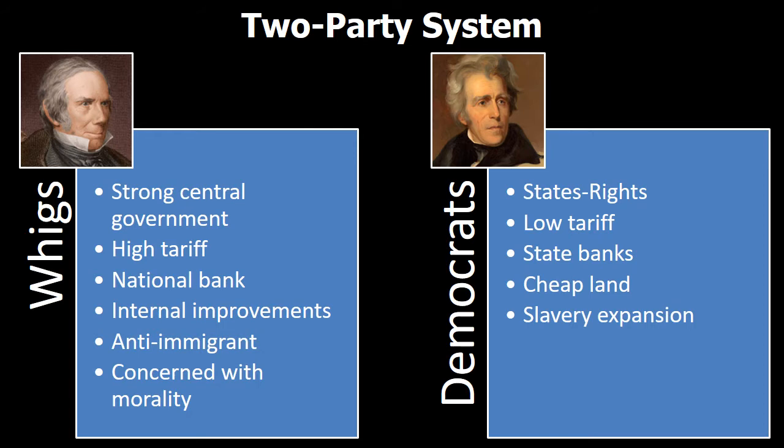The Whigs were an opposition party formed to challenge Jacksonian Democrats, thereby launching the second-party system in America, but they were far from a single-issue party. Their ranks included members of the Anti-Masonic Party and Democrats who were unhappy with the leadership of President Andrew Jackson. Their base combined evangelical Protestants interested in moral reform, abolitionists, and those against the harsh treatment of Native Americans under Andrew Jackson in his rush to expand the country's borders.